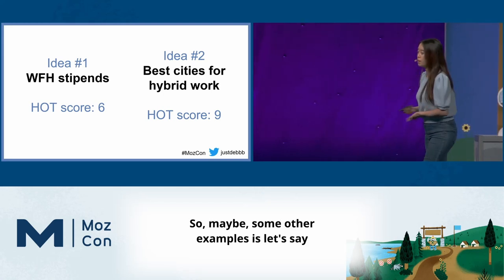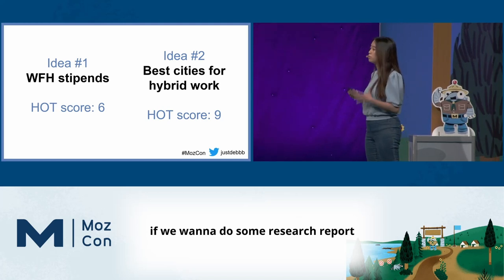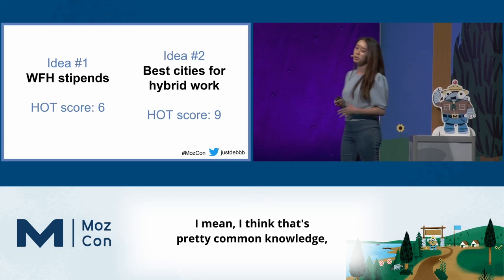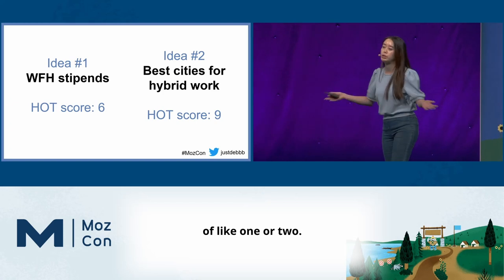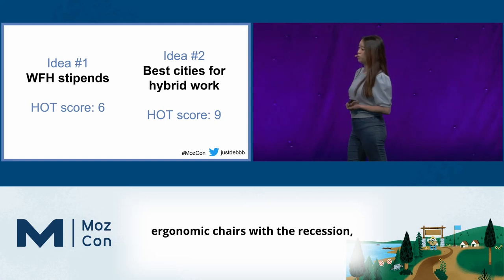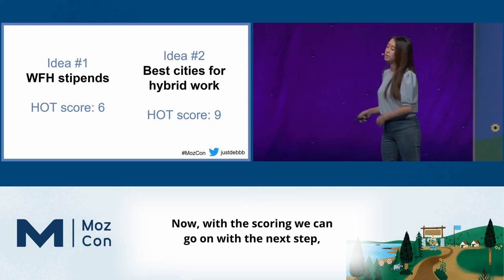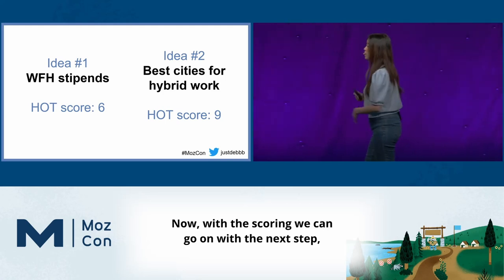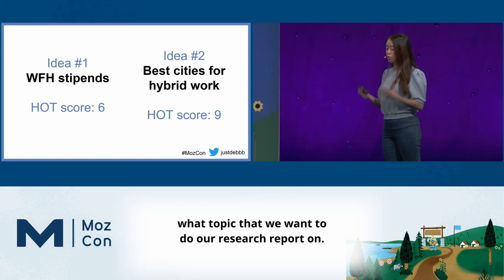Some other examples: if we want to do a research report on the benefits of good posture, that's pretty common knowledge, so that's going to have a really low HOT score of like one or two. Whereas if I could somehow tie back ergonomic chairs with the recession, then that would have a HOT score of like ten. Now, with the scoring done, we can move on to the next step, which is to gather data since we have an idea of what topic we want to do our research report on.